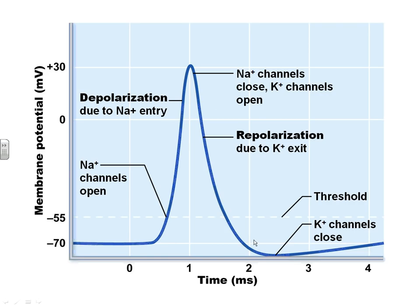This graph shows the action potential. We're looking at one particular place on the muscle fiber membrane. At negative 70, we're looking at the inside of the cell — at resting state it's more negative on the inside. Then whenever the signal is received from acetylcholine, this is where acetylcholine binds to the sodium channel, the channel opens, sodium starts flooding in, and the inside of the cell becomes more positively charged. This part of the graph represents the depolarization.